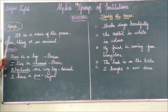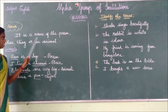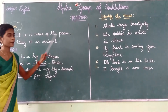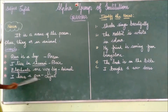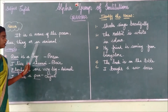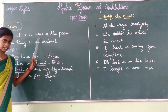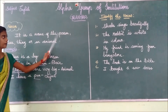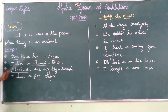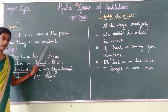Let us see the definition of the noun. What is meant by noun? It is a name of the person, place, thing or an animal. Noun is nothing but it is the name — the name of the person, place, thing or an animal.